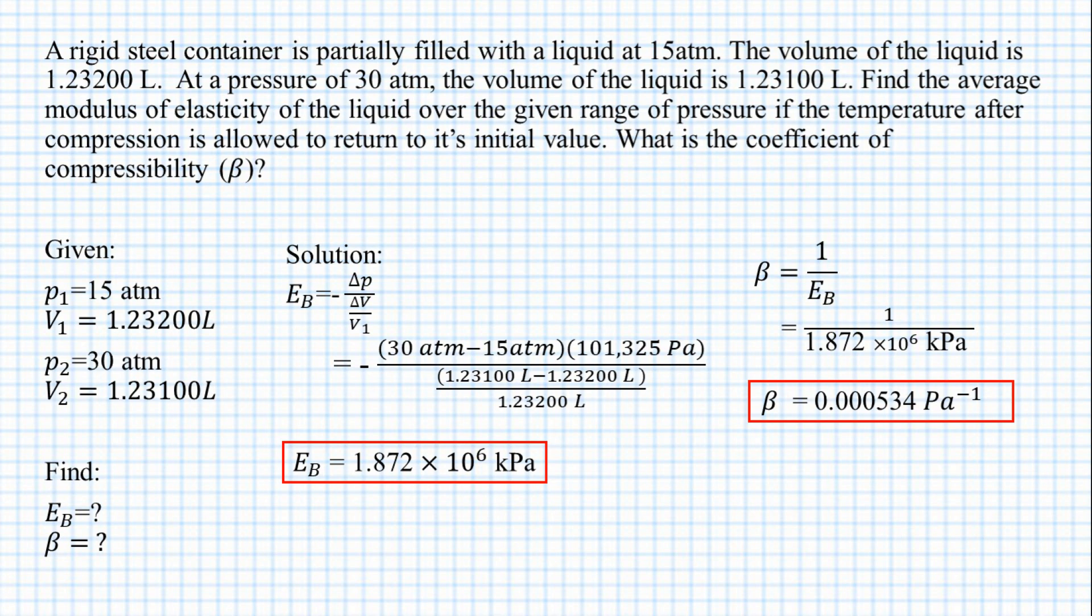Let's do the recap. We solve for the value of the modulus of elasticity since all the values are given and then we plug it in directly to the given formula. We have the value of the modulus of 1.872 multiplied by 10 raised to the power of 6 kilopascals. Then we solve for the compressibility and plug in the given values so we have a value of compressibility equals to 0.000534 pascals.